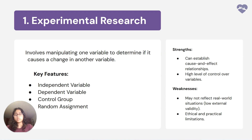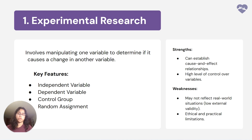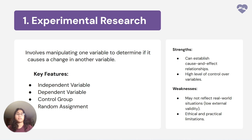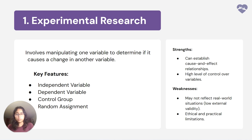The first method we're going to look at is the experimental method. We use this method when we want to see the effect of one variable on other variables. The main components are independent variable, dependent variable, control variables, and the use of random assignment. A strength of this method is that you can establish a cause-and-effect relationship between variables and have a high level of control. Some cons are that it doesn't reflect real-world situations and there can be ethical and practical limitations.